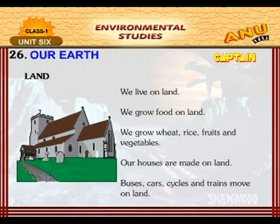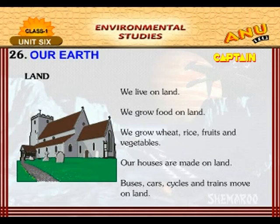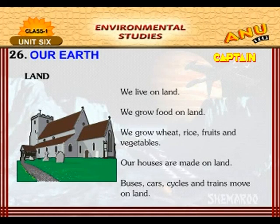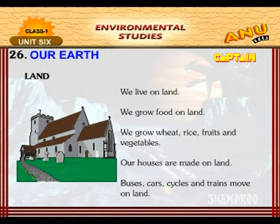We live on land. We grow food on land. We grow wheat, rice, fruits and vegetables. Our houses are made on land. Buses, cars, cycles and trains move on land.